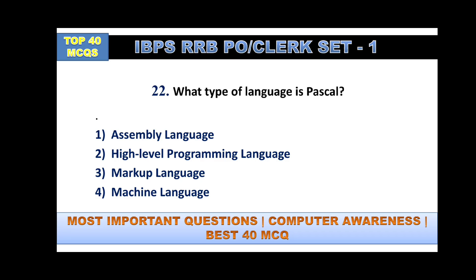What type of language is Pascal? Pascal is a high-level programming language, similar to C and C++. Machine language uses binary — zeros and ones.